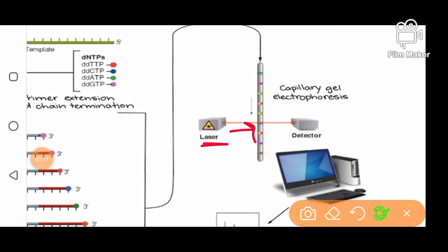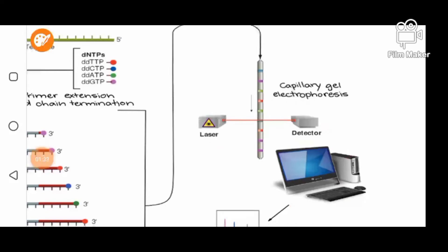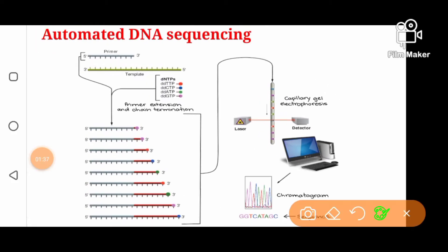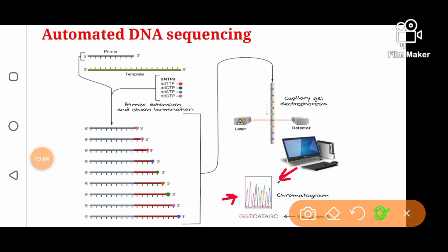For example, if dideoxy adenine — tagged with green — passes by, a green color will be detected by the detector. This detector is connected to a computer programmed to convert the color information into DNA sequence. You can see here the computer creates a chromatogram where every peak represents a specific nucleotide. This is how we sequence larger genomes — the reading step is automated by using fluorescent molecules on the ddNTPs.